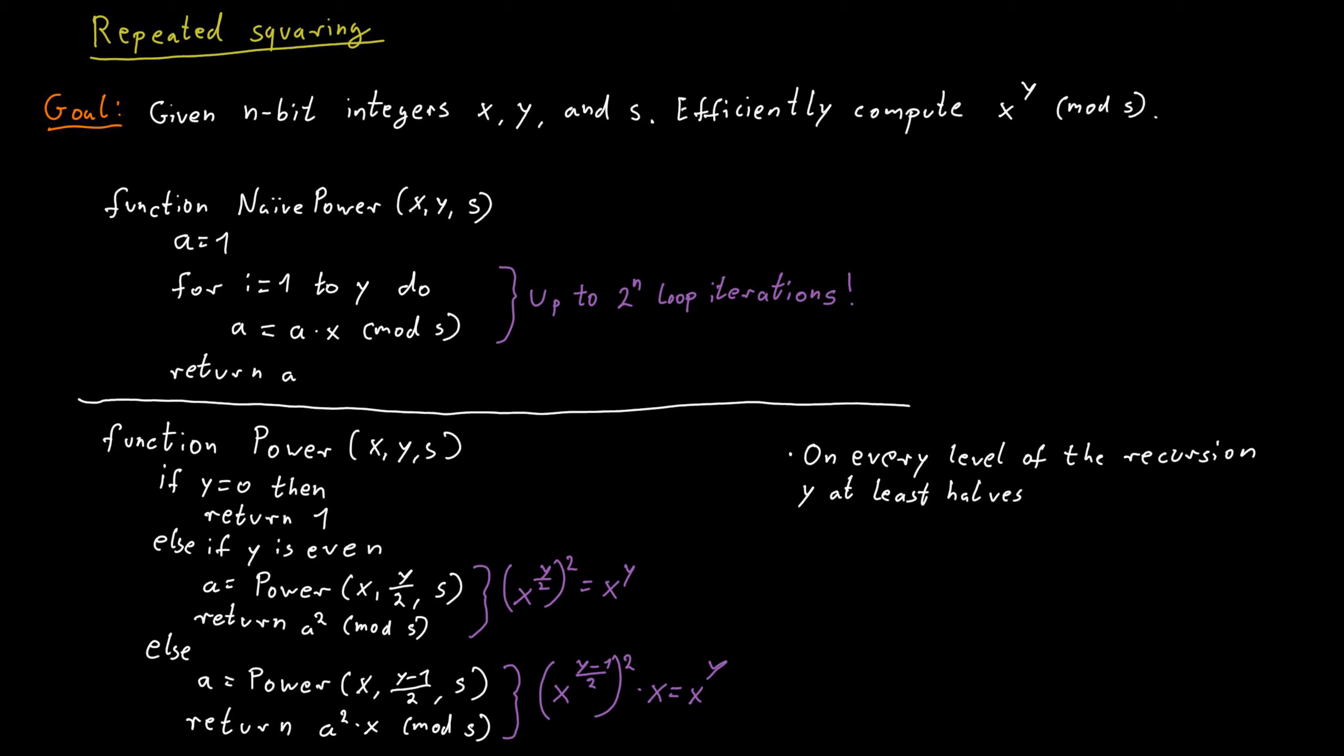If y is even, we divide it by 2. And if y is odd, we subtract 1 and then divide by 2. So in every step, y, this exponent we are interested in, halves.